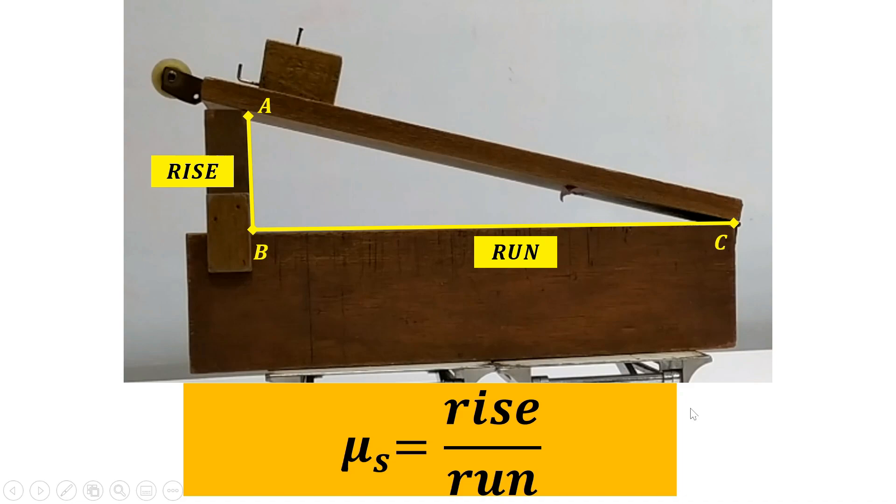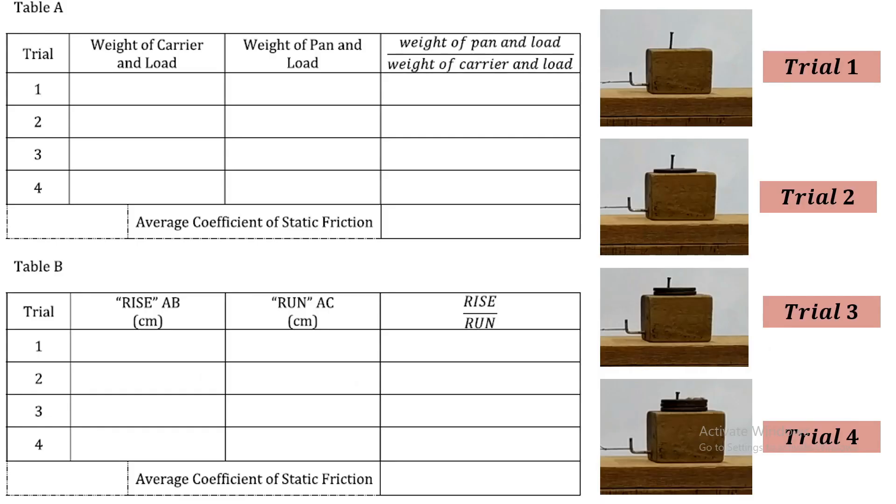Now, we will do 4 trials for each procedure. For trial 1, 2, 3, and 4, we will use this carrier and the load. For trial 1, we only have the carrier. So we will get the mass of this. For trial 2, we have the carrier plus 1 load. For trial 3, we have carrier plus 2 loads. And for trial 4, we have the carrier plus 4 loads.